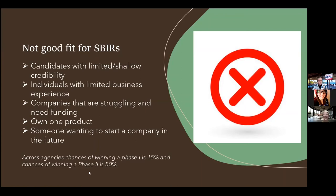Across agencies, the chances of winning a phase one SBIR is typically about 15%, and the chances of winning a phase two is about 50%. I have not been able to find a statistic on winning phase threes, but I intend to ask Mike Shirley who's speaking next week, since that's his big focus area.